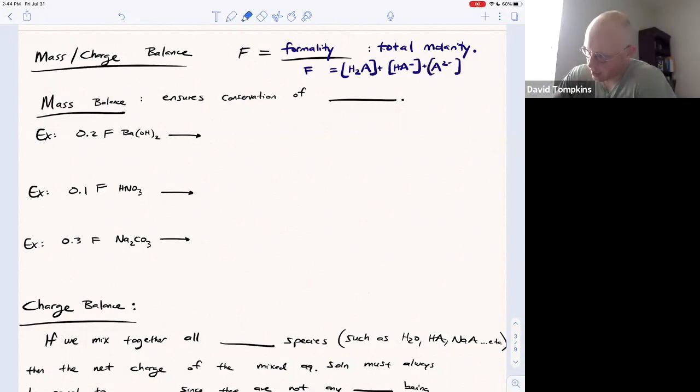So if you put H2A in aqueous solution and it turns into HA minus, or even if it loses another proton and turns into A2 minus, all of these A containing species will sum up to that total molarity or formality. So formality just has units of concentration.